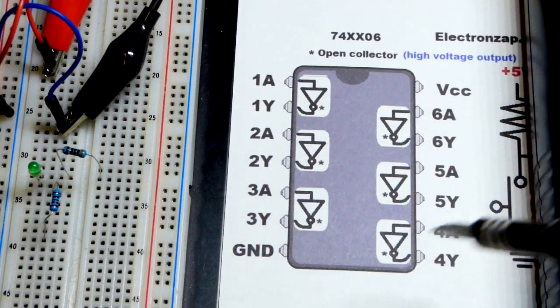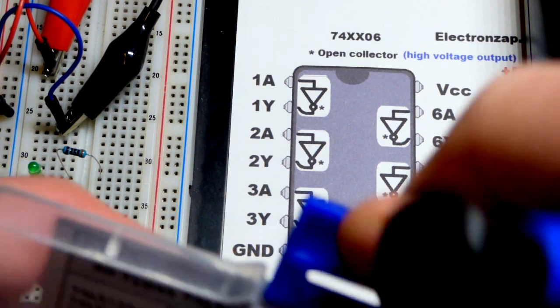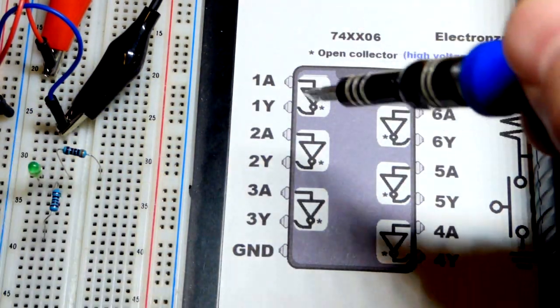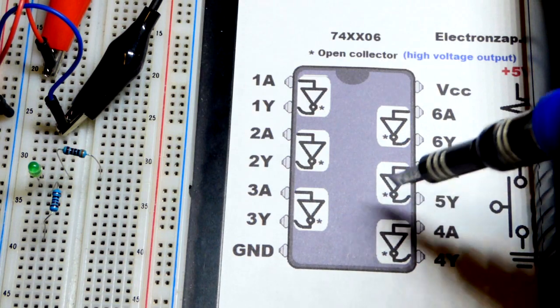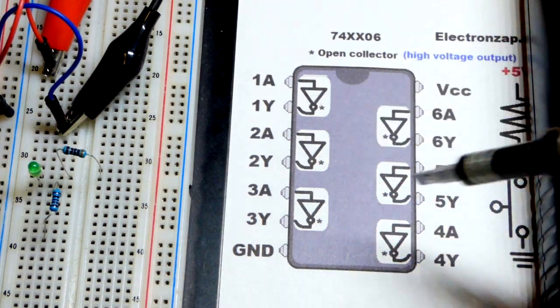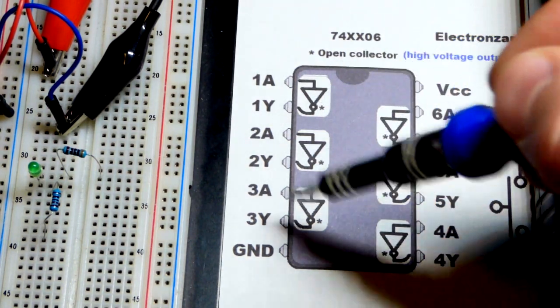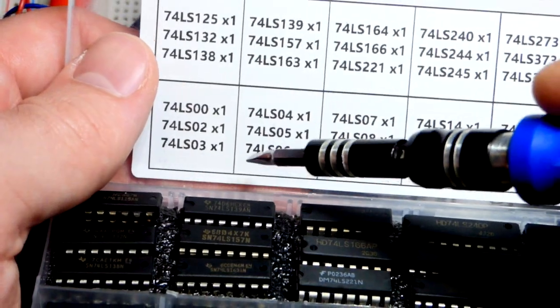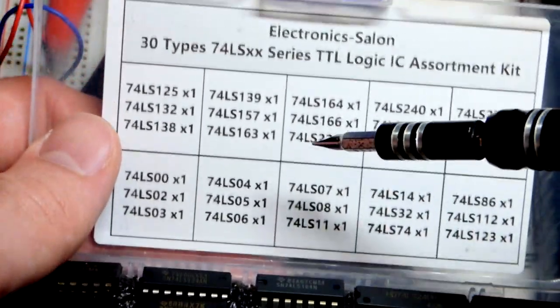So now here's the pin layout for the integrated circuit, the 7406. And this is how I've seen all the hex inverters so far with six inverters in a 14 pin integrated circuit like this. So I grabbed it from this kit here. You can see the part number right there. 7406.